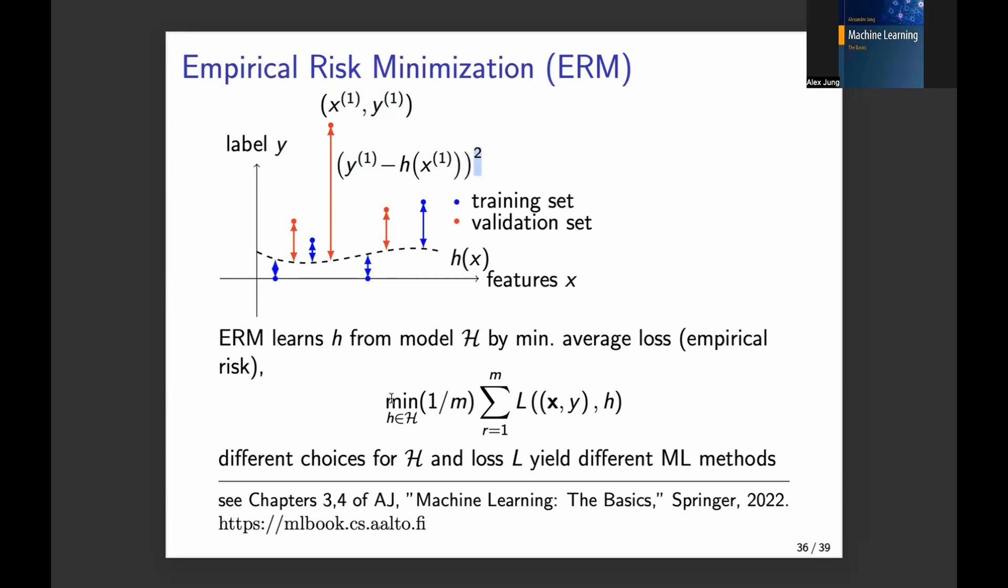And then what machine learning does, what model training is, is solving this optimization problem. So here you also see how machine learning is formulated as an optimization problem. And in this course, you will see how to formulate federated learning as an optimization problem. So we will extend this formulation, which is called empirical risk minimization.